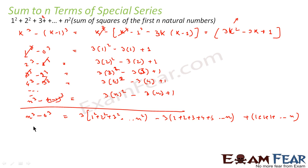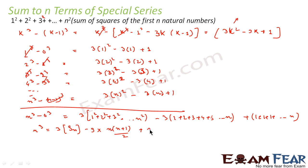So we have n³ = 3·Sn − 3·[n(n+1)/2] + n, where Sn = 1² + 2² + ... + n² is what we want to find, and we have used the known results: the sum 1+2+...+n = n(n+1)/2, and the sum of n ones equals n.